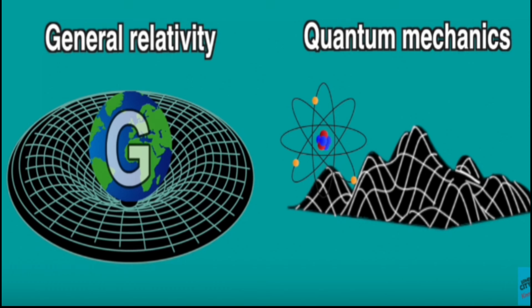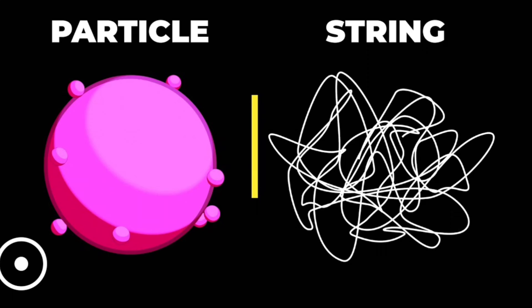String theory is an attempt to reconcile these two theories and create a unified theory of everything, a single mathematical framework that can describe all the forces and phenomena in nature. String theory does this by introducing extra dimensions of space, beyond the three that we are familiar with.